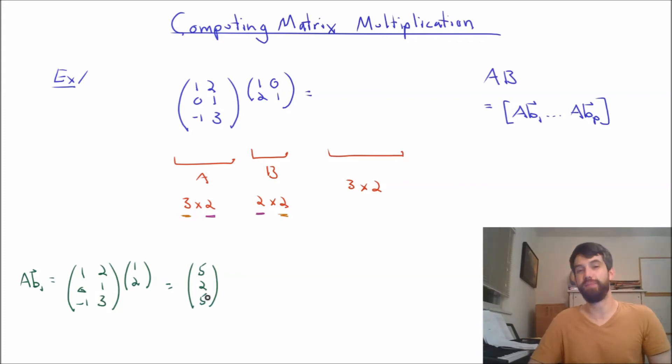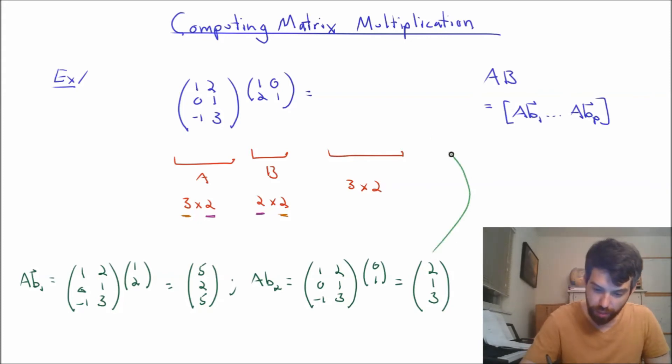I can do exactly the same thing for AB2. Now that I know what these two columns of my output matrix are, I can just go and take both of them and put them back in. And what this is going to give me is this 3 by 2 matrix where the first column is 5, 2, 5, and where the second column is 2, 1, 3.